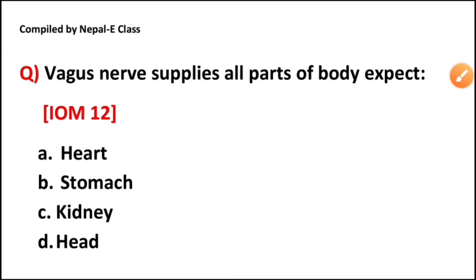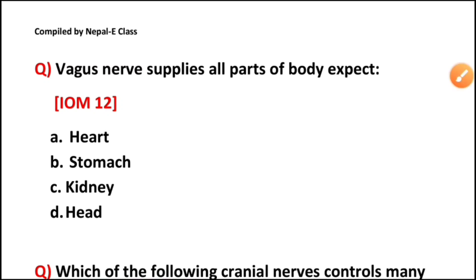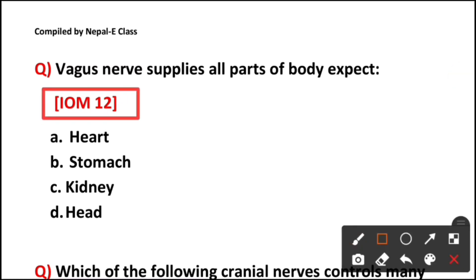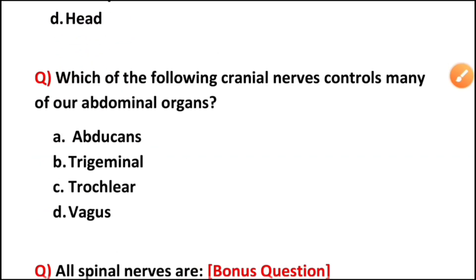Question four: the vagus nerve supplies all parts of the body except — option A heart, option B stomach, option C kidney, or option D head? The correct answer is option D — head — because the vagus nerve supplies major abdominal organs like lungs, larynx, esophagus, heart, kidney, and stomach, but does not supply the head.